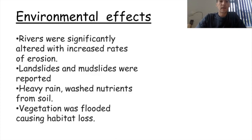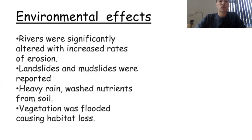Environmental effects: rivers were significantly altered with increased rates of erosion. There were lots of landslides and mudslides, especially in the Lake District. Heavy rain washed nutrients away from the soil, making it more difficult for plants to grow. And vegetation was flooded, causing habitat loss where some animals might have lived.